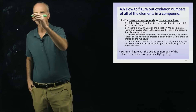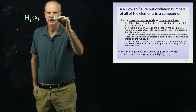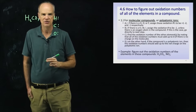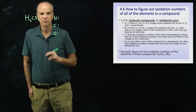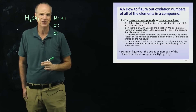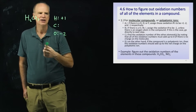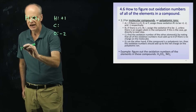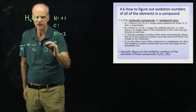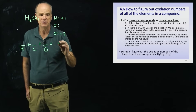Let's figure out the oxidation numbers of all the elements in these two molecules. The first molecule is carbonic acid, H₂CO₃. Our goal is to find an oxidation number for hydrogen, carbon, and oxygen. Hydrogen's oxidation number is always plus one. For oxygen, we assume negative two. Now, hydrogen's oxidation number, plus carbon's oxidation number, plus oxygen's oxidation number, must all be equal to zero, since it's a molecular compound.